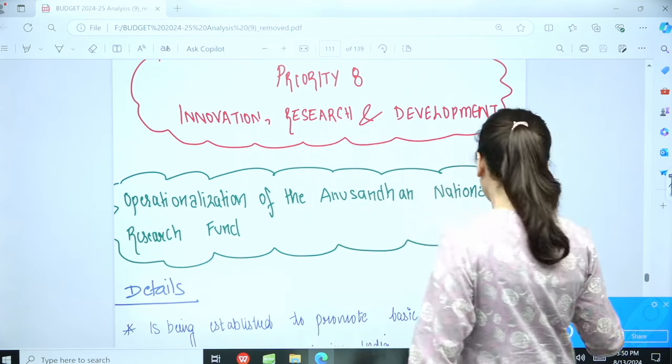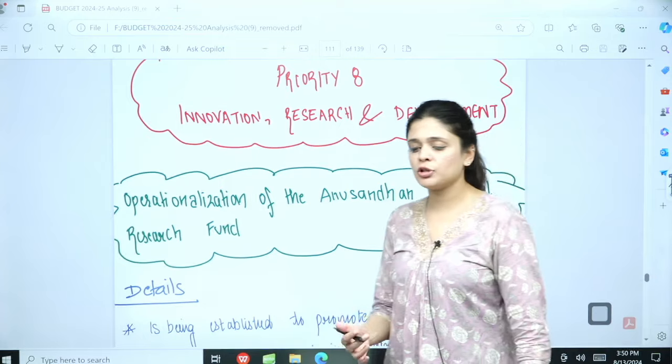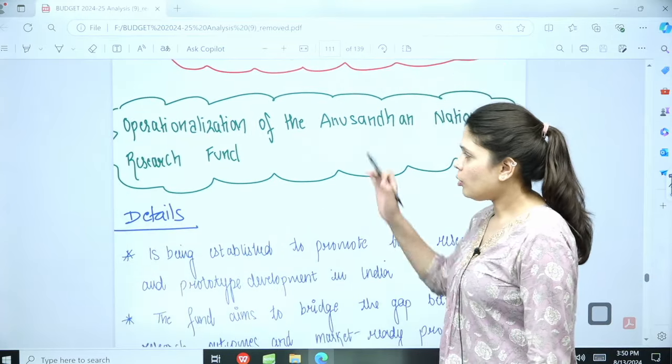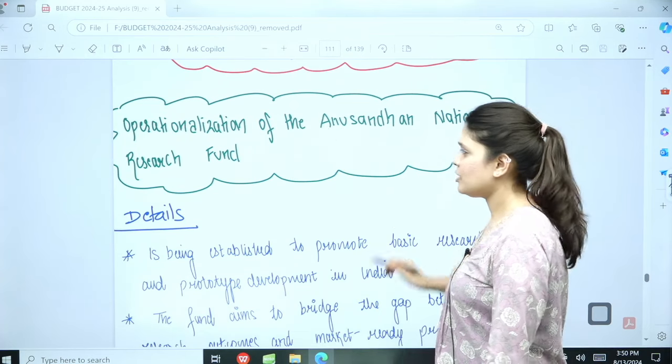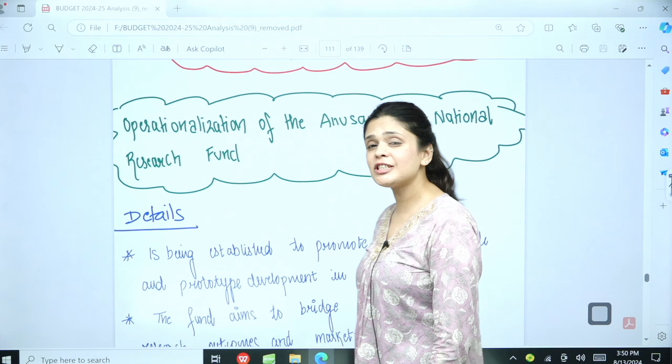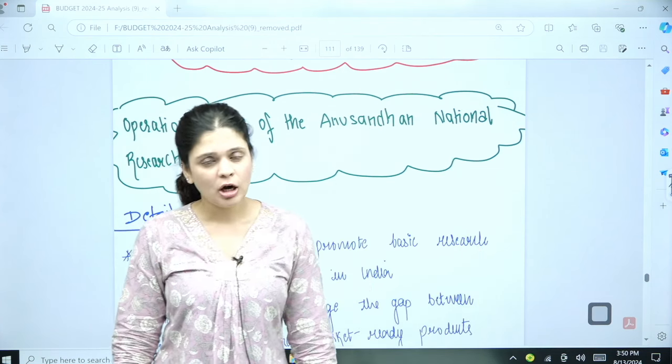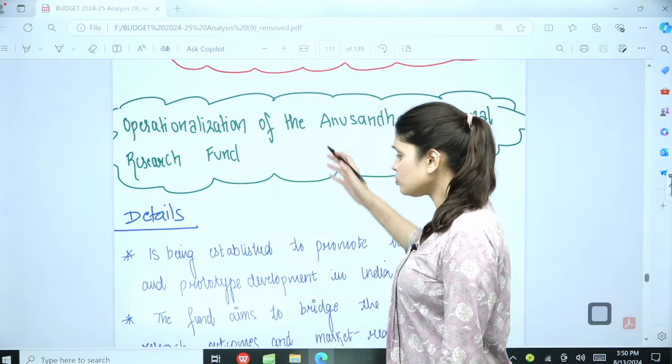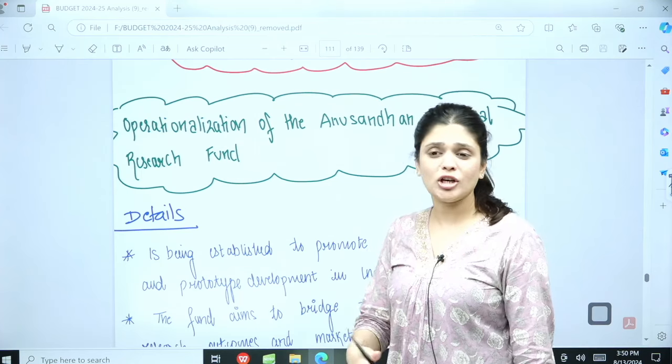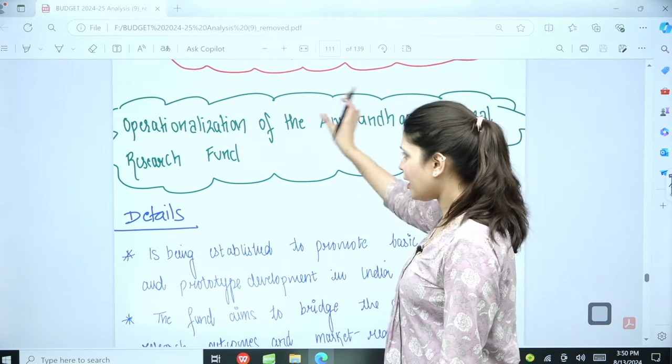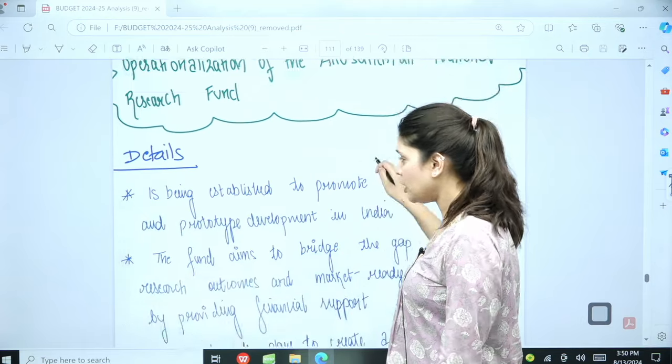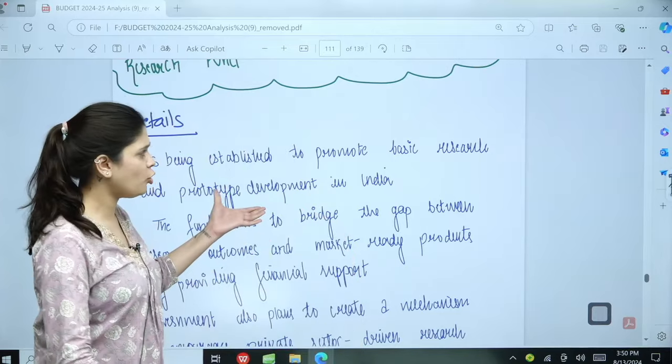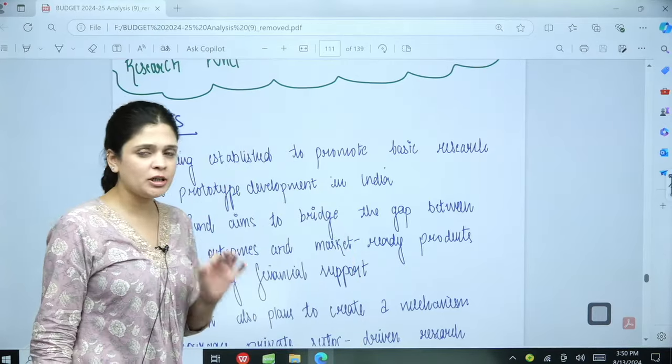Priority number eight focuses on innovation, research and development. Number one is operationalization of the Anusandhan National Research Fund. There was a scheme that was enacted in 2023, which focused on research and development of the natural sciences. Under that we will be creating a fund, established to promote basic research and prototype development in India.